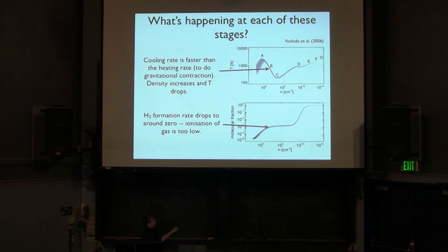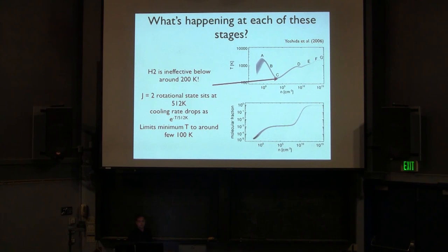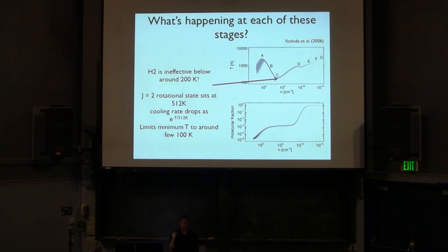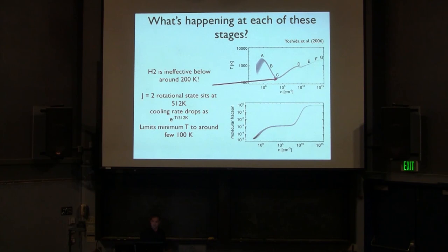The H2 fraction starts to plateau because recombination of electrons and protons occurs and you run out of catalyst. For a very large range of density the H2 fraction sits there and does almost nothing. The temperature hits a minimum around 200 K, because H2 cooling is only really effective above ~512 K where the J=2 rotational state is. Below that it drops off exponentially, and for an H2 fraction of a few times 10^-3 you cannot cool below ~200 K. The recombinations have set an upper limit to the H2 fraction, which limits the bottom of this temperature-density curve.